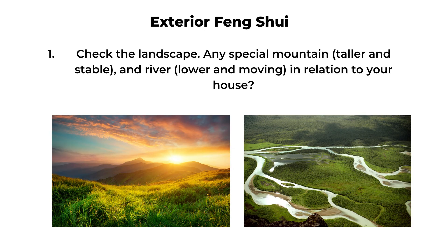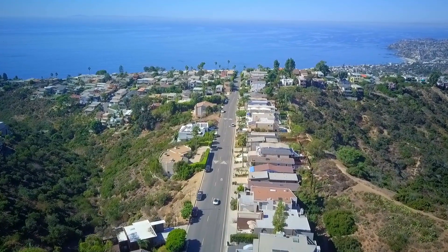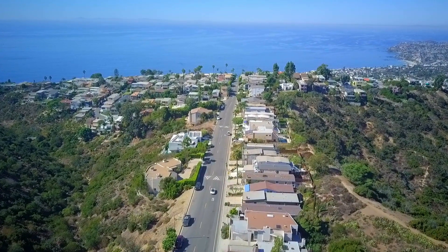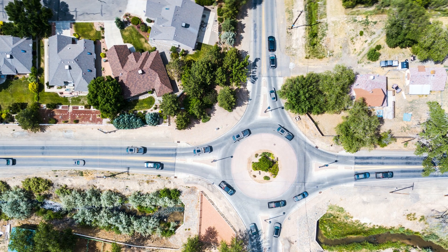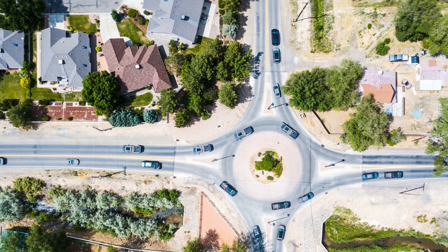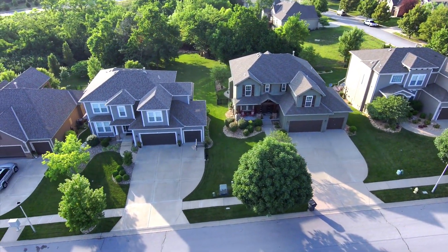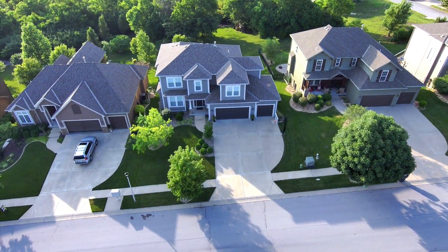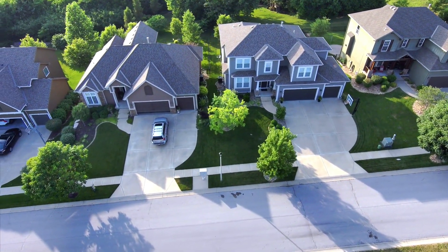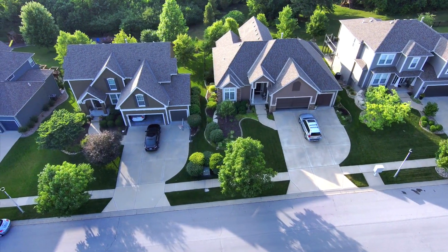The basic landscape includes a mountain and water. The mountain can mean anything that's taller, including buildings. And the water can be anything that's lower and moving, such as traffic, street, road, or highway. You look at the location of the mountain and water in relation to your house, and you can see if it's beneficial or if it creates sha qi that you should avoid. This is a bigger area — you might want to look at a map of the whole city or the whole region and see if there's anything significant.